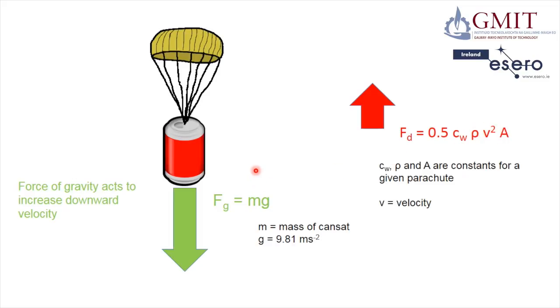Now we know that gravity is causing the CAN's velocity to increase all the time. So if it's increasing all the time then the drag force is increasing all the time. So as the CAN falls the drag force increases until the drag force exactly equals the force caused by gravity.